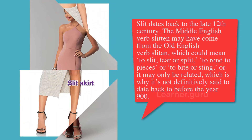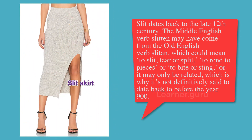Slit dates back to the late 12th century. The Middle English verb 'slitten' may have come from the Old English 'slitten,' which could mean to slit, tear, or split — to rent to pieces, or to pit or sting. It may only be related, which is why it is not definitively said to date back to before the year 900.